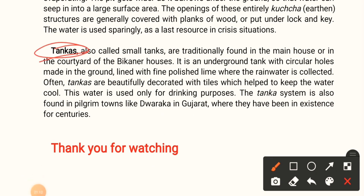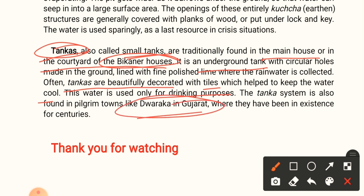Tankas are small underground tanks traditionally found in the main house or courtyard of Bikaner houses. They are circular holes made in the ground, lined with fine polished lime, where rainwater is collected. The tanks are often beautifully decorated with tiles which help keep the water cool. This water is used only for drinking. The tank system is also found in pilgrim towns like Dwarka in Gujarat, where they have been in existence for centuries. This concludes the discussion of all traditional water harvesting systems of Rajasthan.